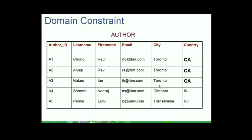A domain constraint specifies the permissible values for a given attribute. Let us take the example of the country attribute in our relation author. We know this attribute must contain two-lettered country codes such as CA for Canada, IN for India, etc. Supposing a value of 34 is entered for the country — does it make any sense? No. Of course, unless there is another table which maps country codes in letters to numbers, but we do not want to induce redundancy either.